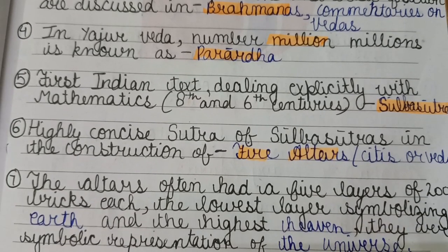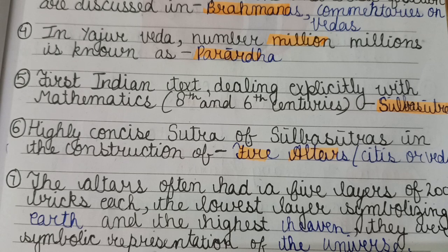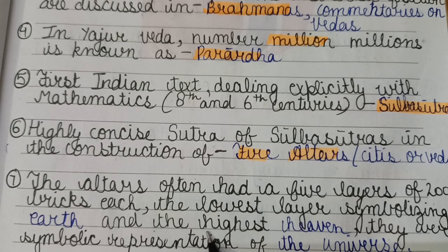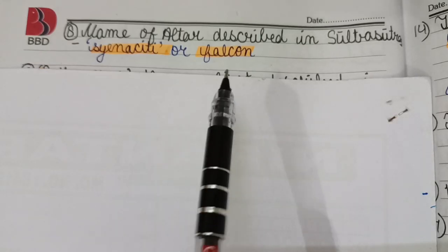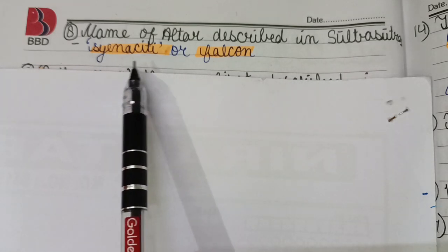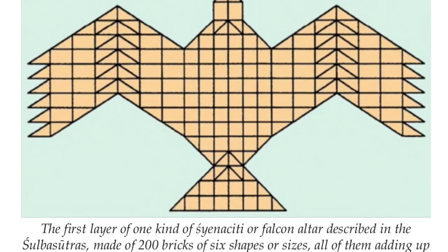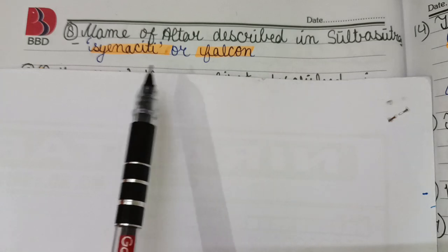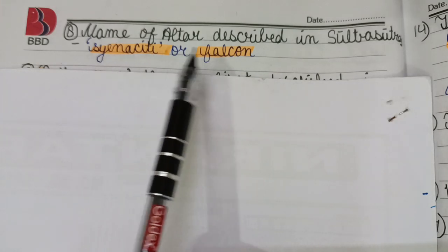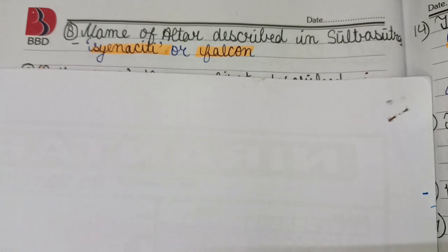The fire altars often had five layers of 200 bricks each. The lowest layer symbolized the earth and the highest symbolized heaven, making them a symbolic representation of the universe. The most important altar described in the Sulva Sutras is known as Syenaciti, or the Falcon altar.